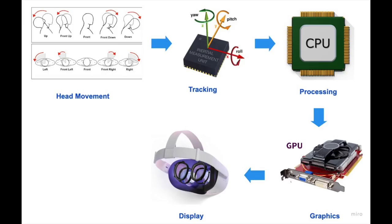The CPU sends the correct image to the HMD, which then displays it. Essentially: your head movement is tracked, the tracker tells the CPU what you're looking at, the CPU speaks to the GPU — the graphics processing unit — the GPU then sends the images to the display, and the display shows the image to your eyes.